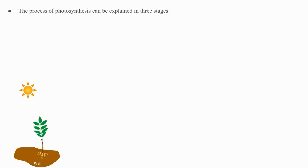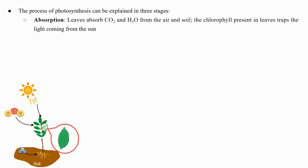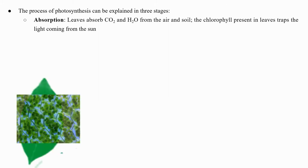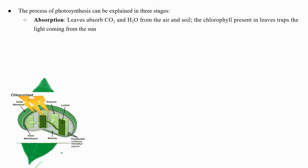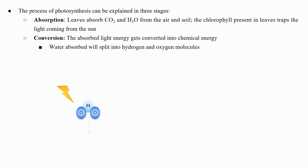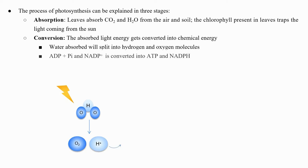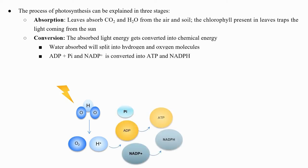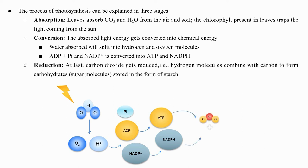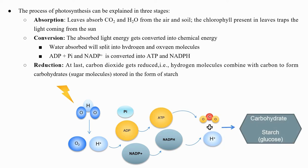The process of photosynthesis can be explained in three stages. Absorption: leaves absorb carbon dioxide and water from the air and soil; the chlorophyll present in leaves traps the light from the sun. Conversion: the absorbed light energy gets converted into chemical energy; water splits into hydrogen and oxygen molecules, while ADP and inorganic phosphate and NADP+ are converted into ATP and NADPH. Reduction: carbon dioxide gets reduced as hydrogen molecules combine with carbon to form carbohydrate sugar molecules.